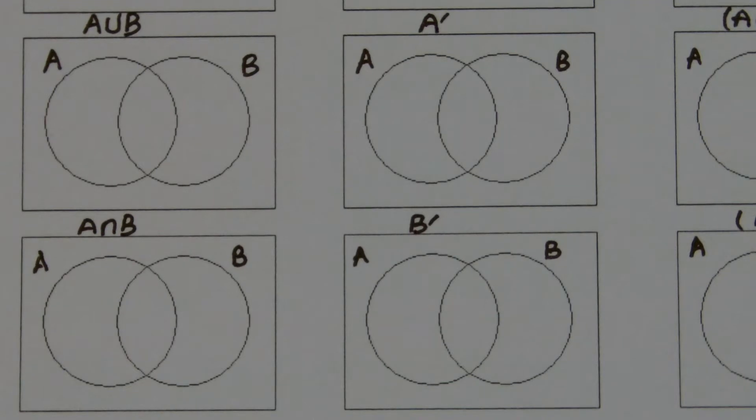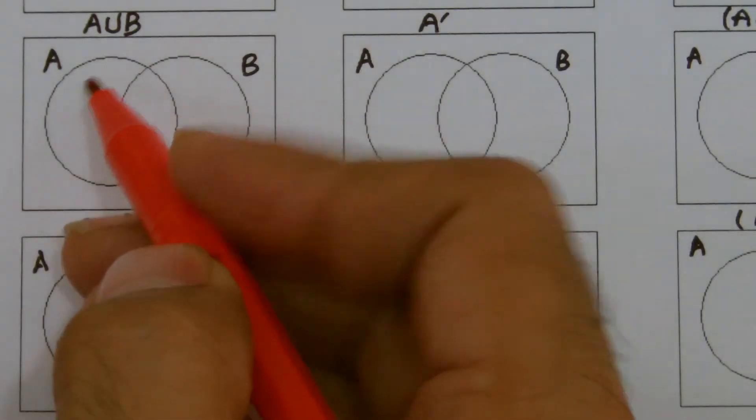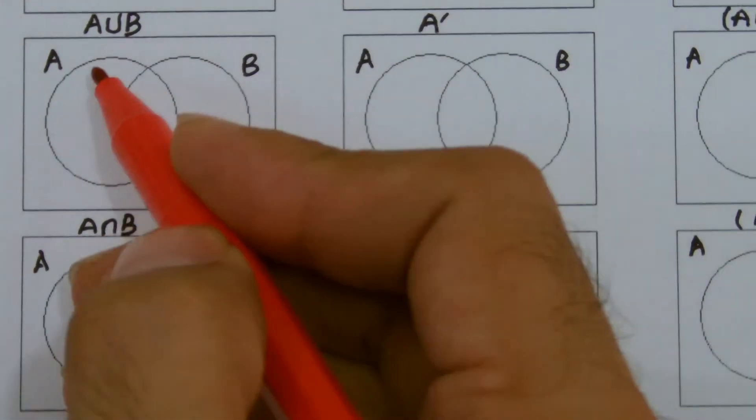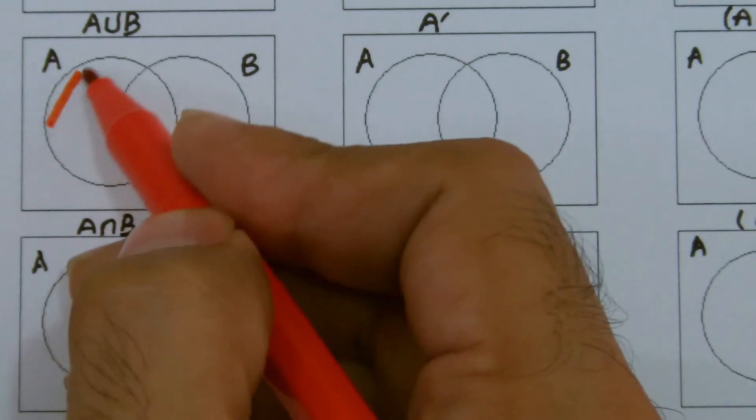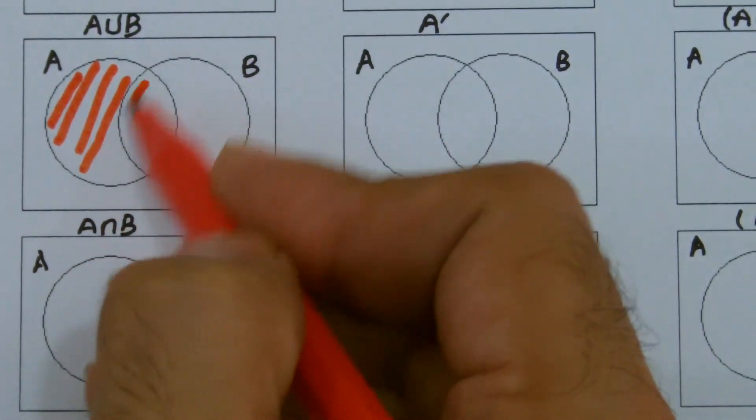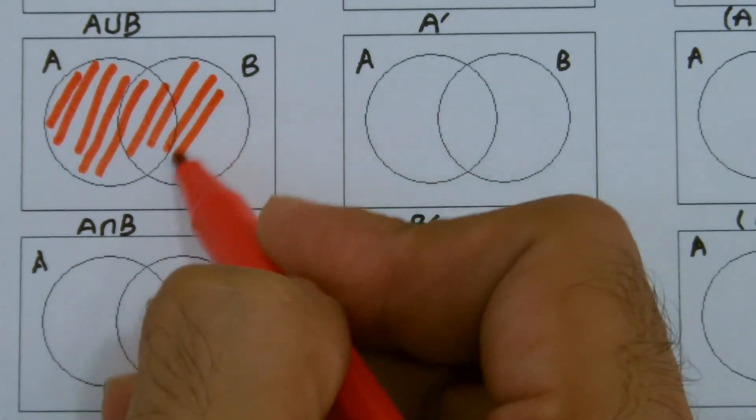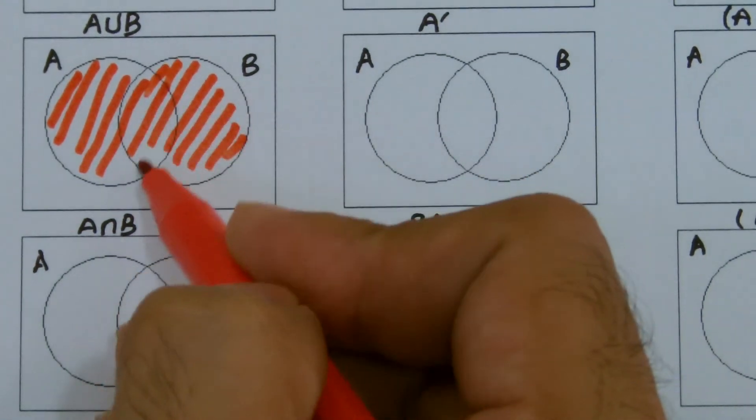We'll give it a start with the basic A union B. Now A union B means we are looking for everything that is the part of A as well as B. So I'd be shading both A and B, everything in A and B. So that's the region actually I'll be shading.